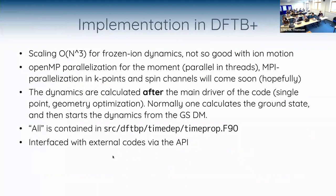Regarding the implementation in DFTB+ for purely electronic dynamics: it scales as order N-cubed for frozen-ion dynamics. For the moment it is only OpenMP parallel — you will not gain anything by compiling with MPI for this feature. At some point, hopefully soon, MPI parallelization over K-points and spin channels will be added. Normally we build the ground state density matrix and start dynamics from there, though one could also start from an excited state density matrix or manually excite electrons to some orbital.